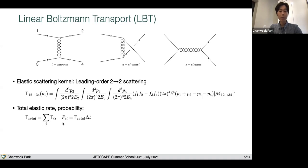By integrating over all possible momenta of two, three, and four, you can get the scattering rate for P1 for this incoming jet shower parton. The total elastic rate is the sum over all possible scattering channels like QQ or QG and GG. The probability of having one elastic scattering for a given delta T is the total rate multiplied by delta T.